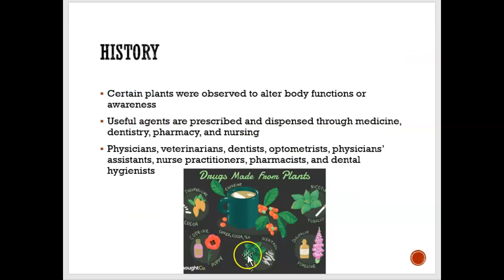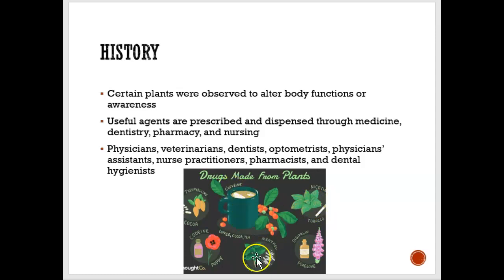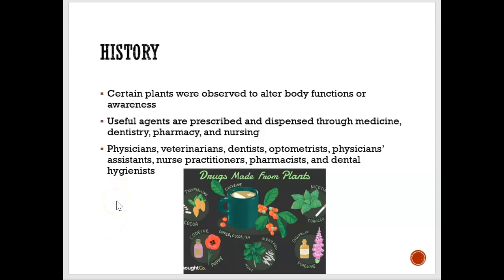This picture shows plants, and drugs can actually be made from plants. Caffeine, for example, can be made from plants, and codeine could be made from a plant as well. Way back before, there were certain plants that changed behavior in the body — certain plants that made you feel better, or made you feel less sick, or made a cough go away.